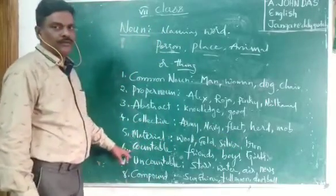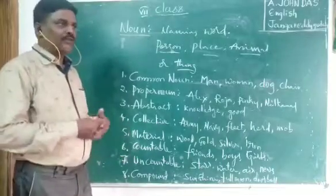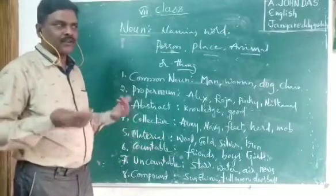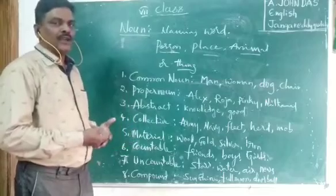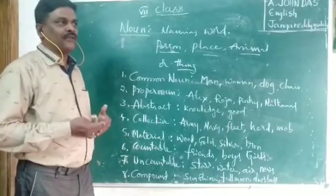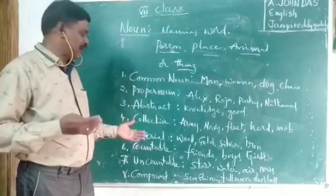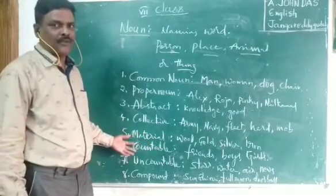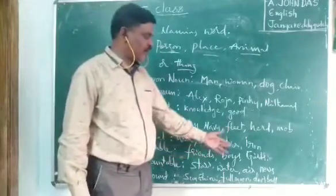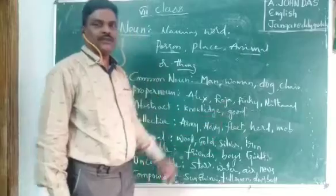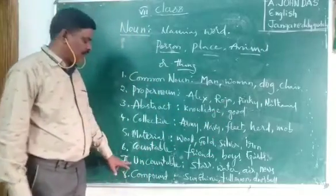Countable noun means we can count it. For example, five friends, six friends, or a hundred friends — friends is countable. I have three thousand three hundred friends on Facebook. So friends, boys, girls, people, etc. are countable nouns.